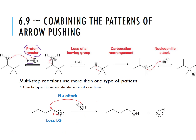This is a secondary carbocation — it's bonded to two carbons. We look at its neighbors: over here there are three hydrogens, but if we were to shift one of those hydrogens over, we would end up with a primary carbocation. If we shift over one of the methyl groups from the other neighbor carbon, we will end up with a tertiary carbocation. There aren't any hydrogens on the other neighboring carbon to shift.